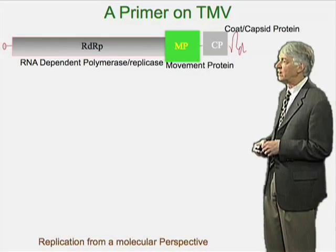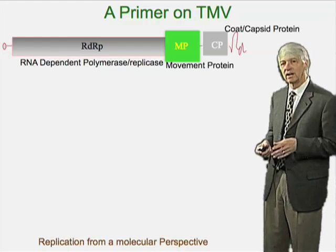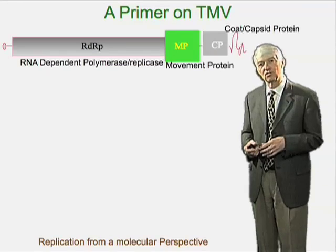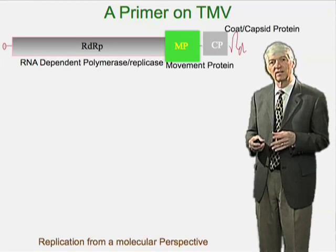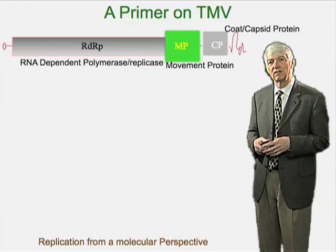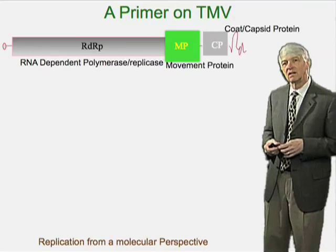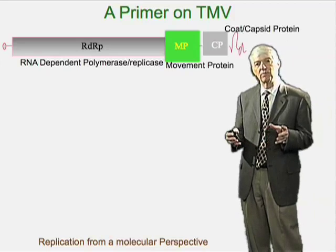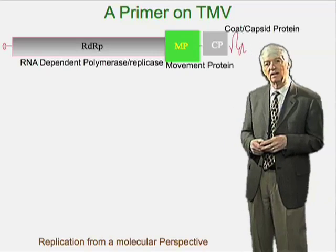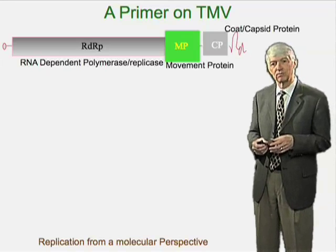The genome of tobacco mosaic virus is a single, very simple RNA molecule. It encodes three genes. The first is an enzyme that helps the virus copy itself — it's an RNA-dependent RNA polymerase. The green box indicates the protein encoded by the virus to help it move from cell to cell, and the blue box indicates the location of the capsid protein.